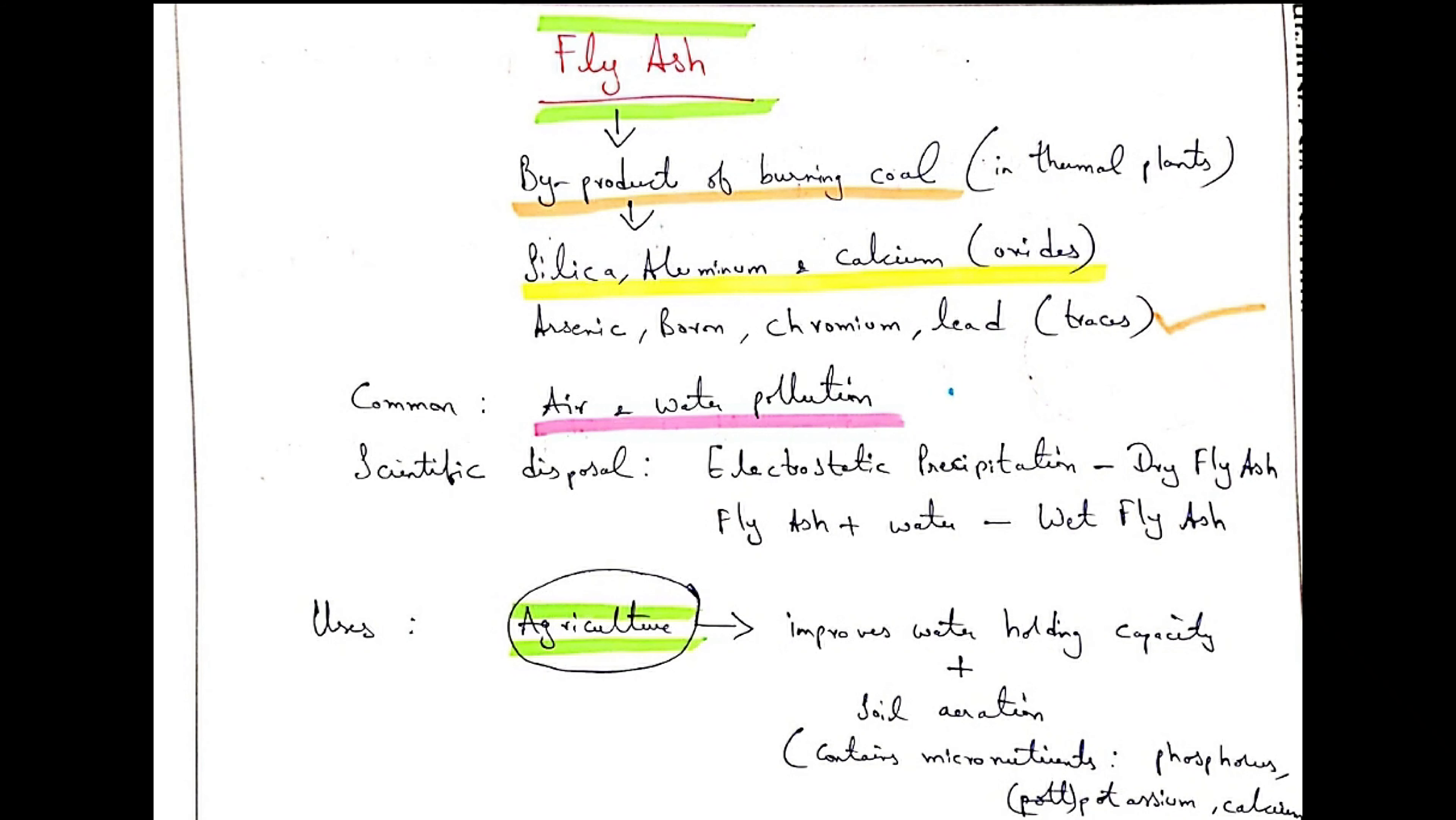Fly ash is simply a byproduct of burning coal in thermal plants. What do we get from fly ash? Oxides like silica, aluminum, and calcium. You can also find traces of arsenic, boron, chromium, and lead. What are the